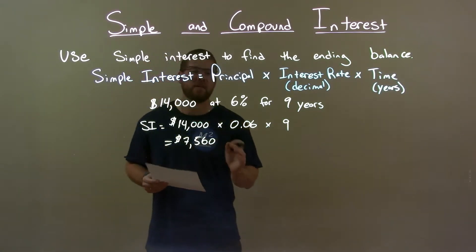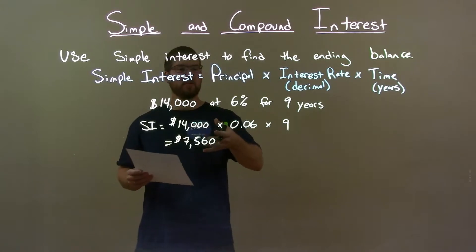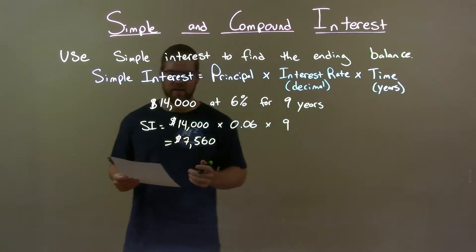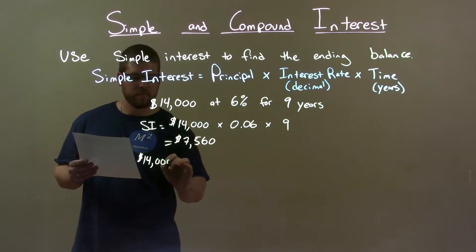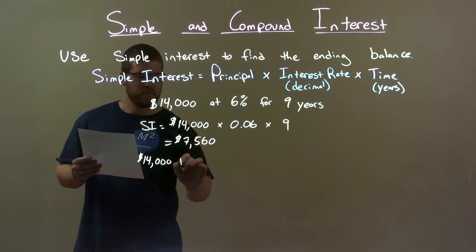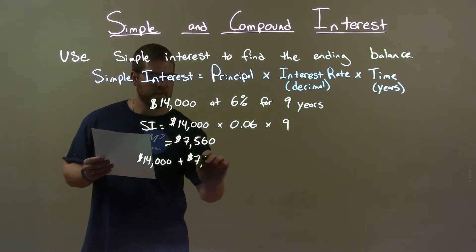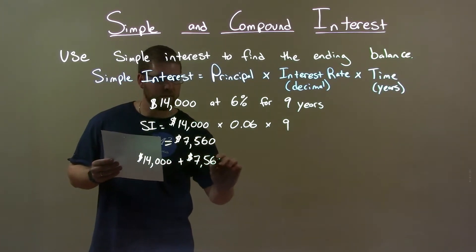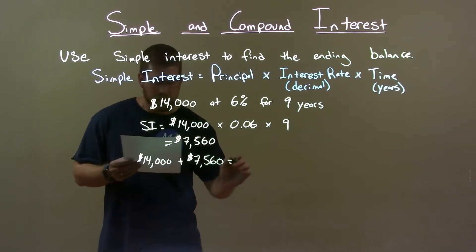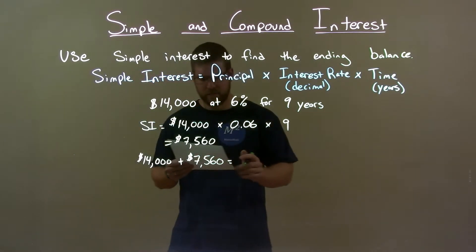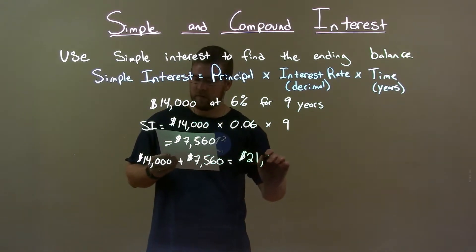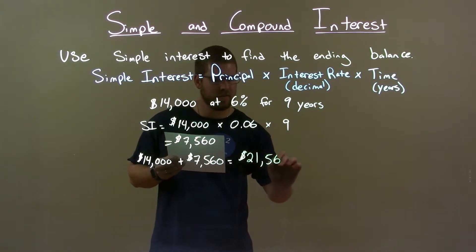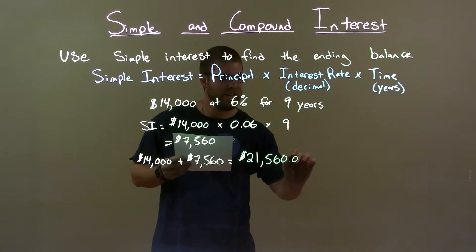I then have to add that back to my principal to get the ending balance. So my principal, $14,000, plus $7,560, gives me an ending balance of $21,560.00.